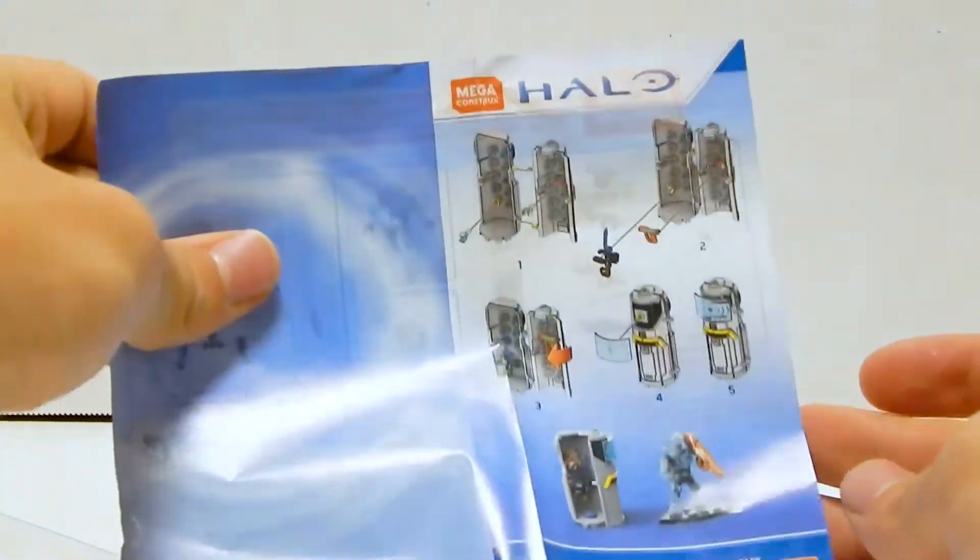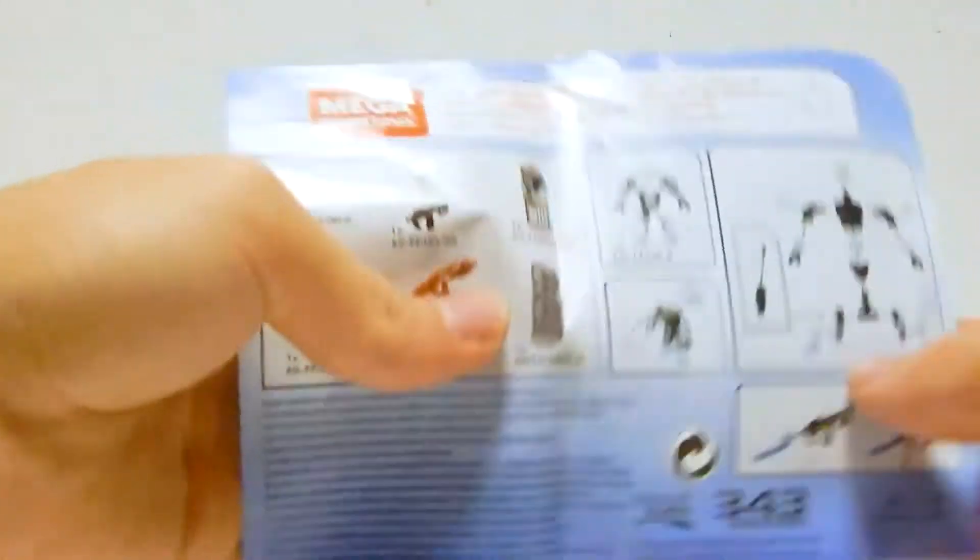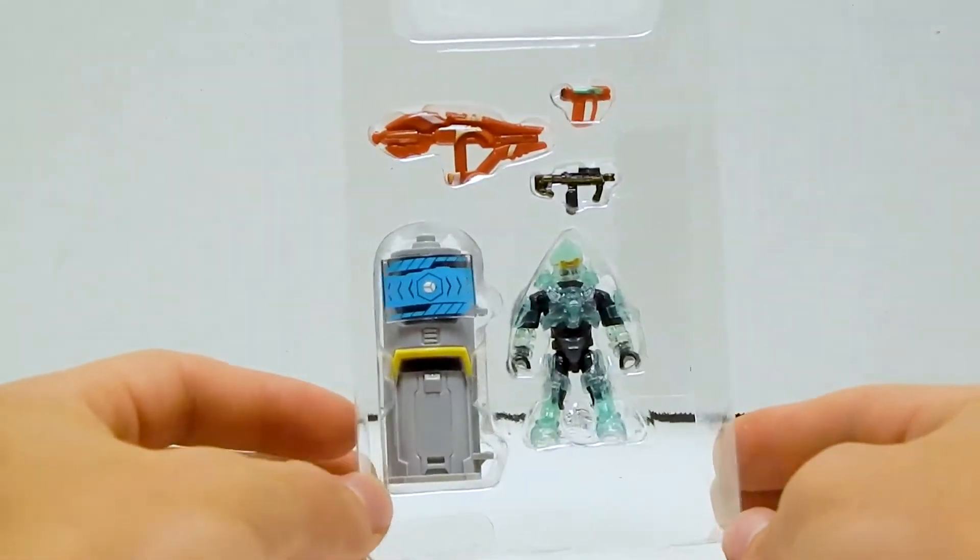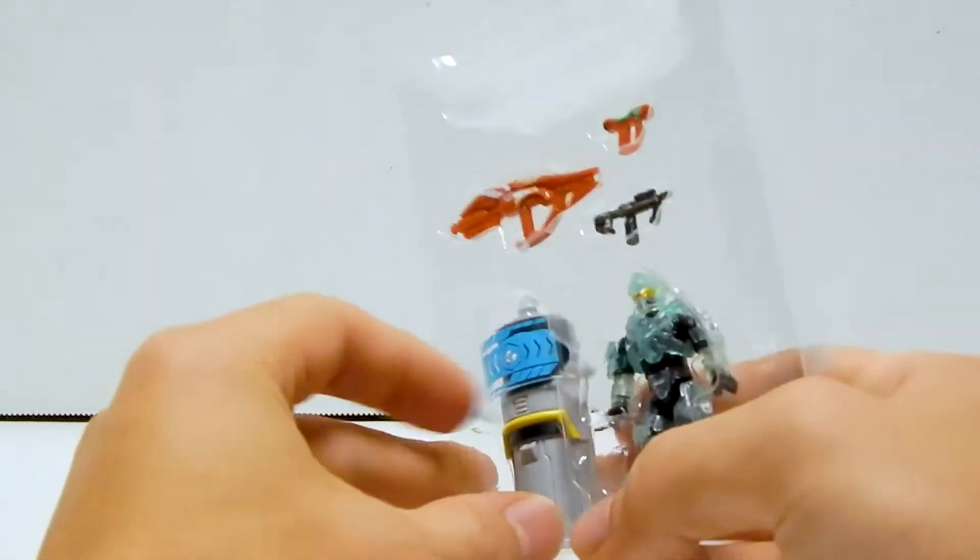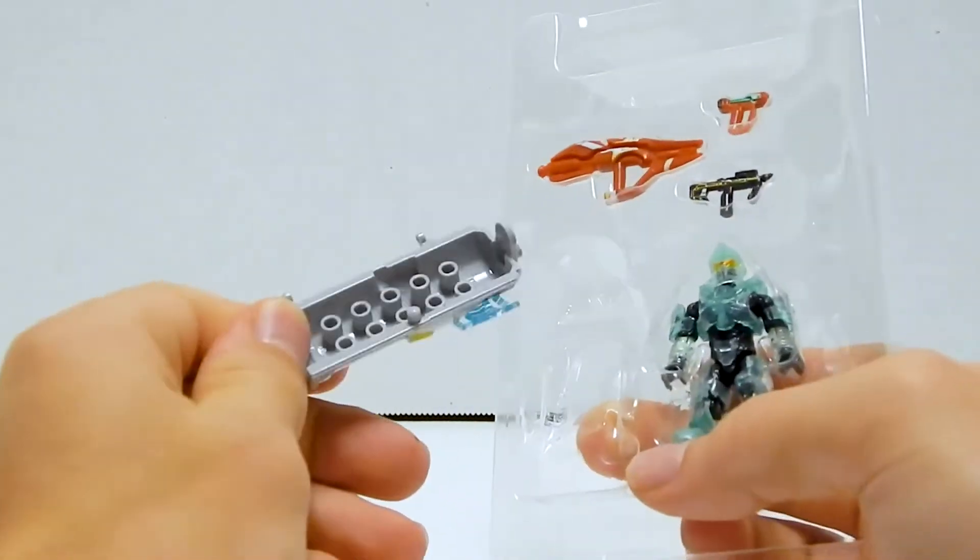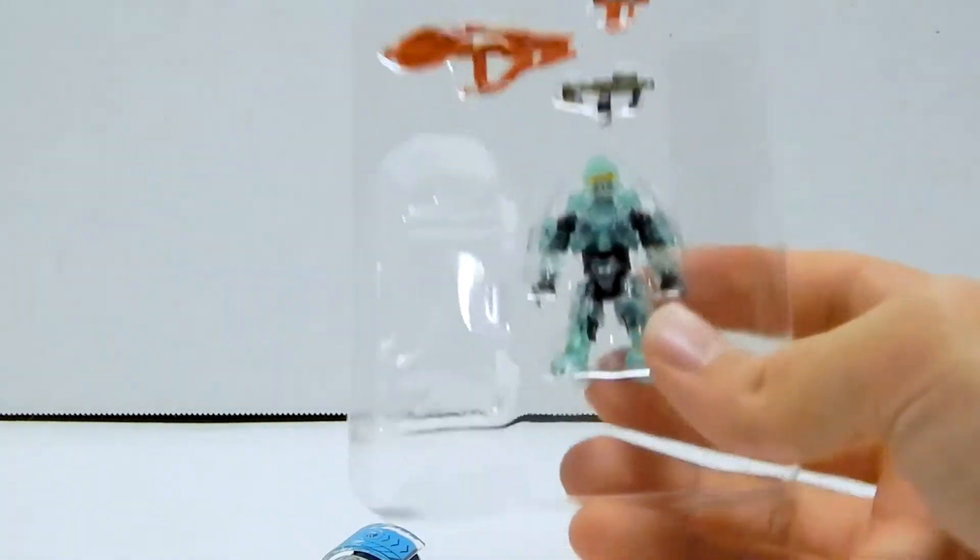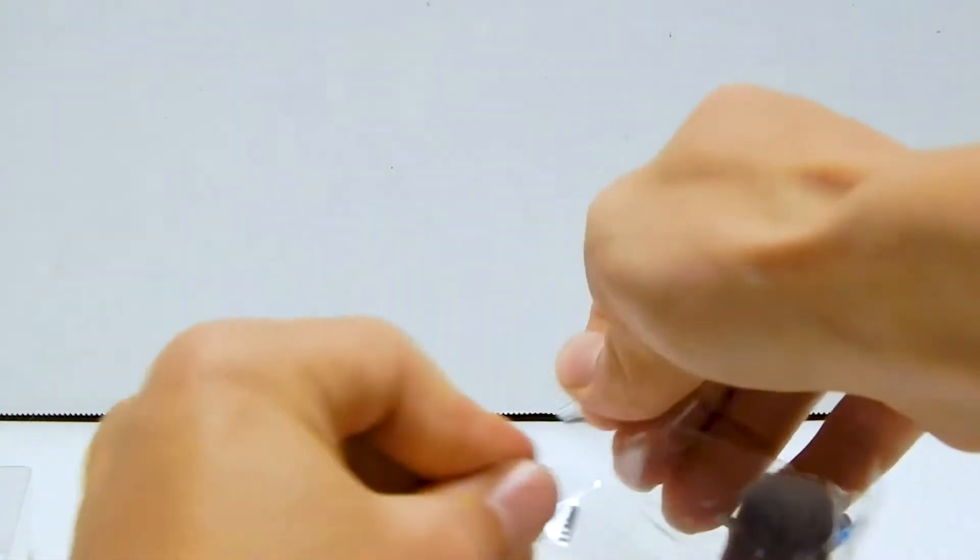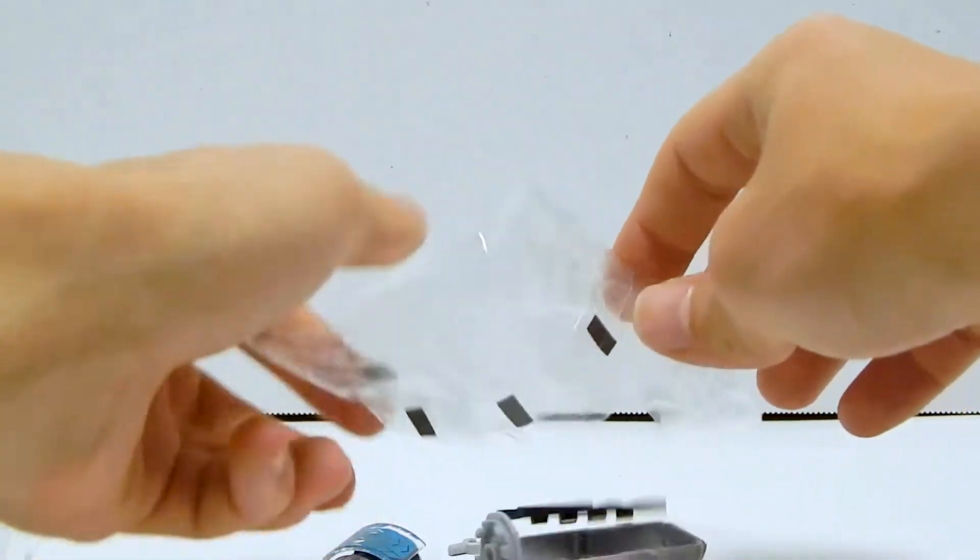The backing also doubles as the instructions on how to put the stuff together and a parts checklist. That's how it comes straight out of the package. We have a little compartment off to the side that has the other half of the wreck station. That's kind of important.